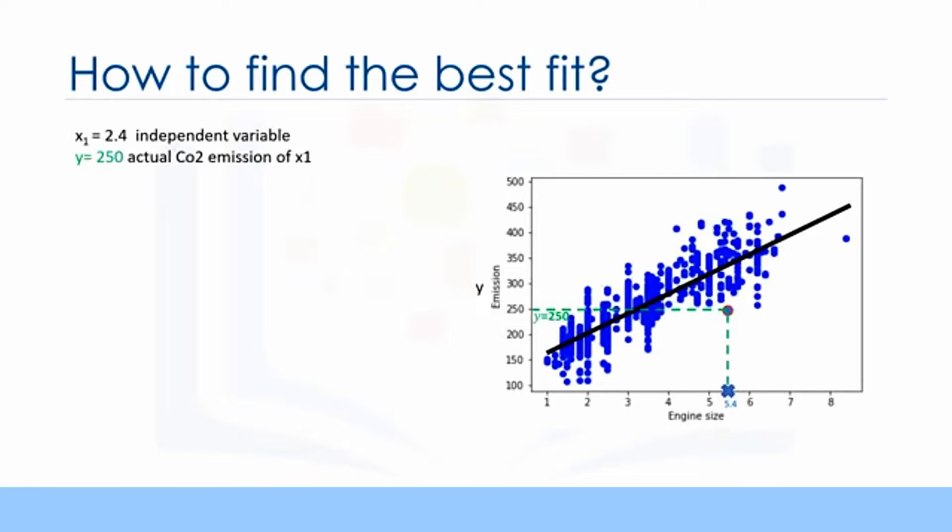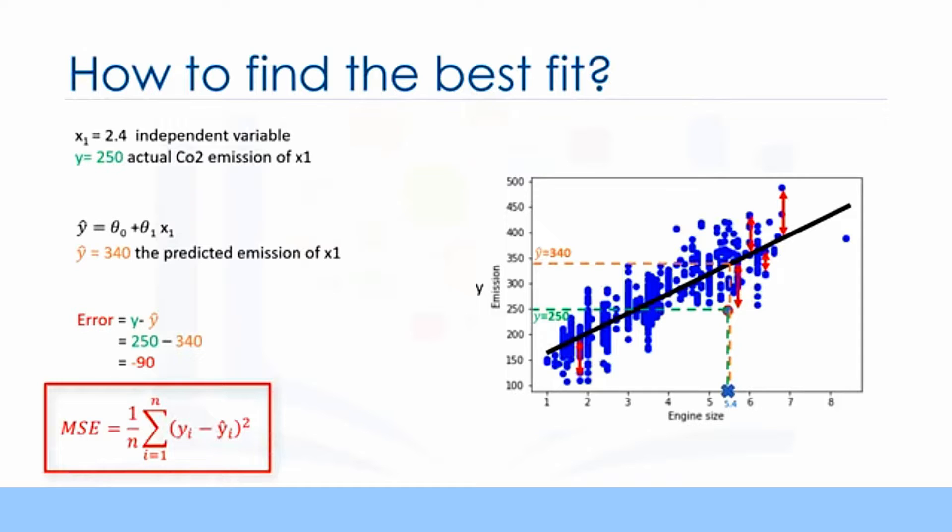Best fit here means that if we have, for instance, a car with engine size x1 equals 5.4 and actual CO2 equals 250, its CO2 should be predicted very close to the actual value, which is y equals 250, based on historical data. But, if we use the fit line, or better to say, using our polynomial with known parameters to predict the CO2 emission, it will return y hat equals 340. Now, if you compare the actual value of the emission of the car with what we've predicted using our model, you will find out that we have a 90 unit error. This means our prediction line is not accurate. This error is also called the residual error. So, we can say the error is the distance from the data point to the fitted regression line. The mean of all residual errors shows how poorly the line fits with the whole dataset.